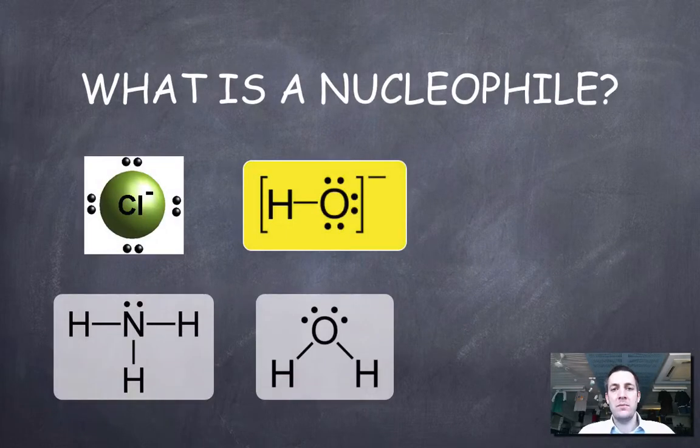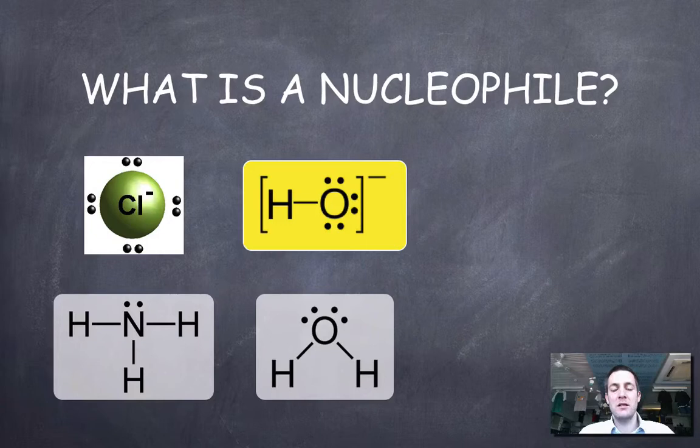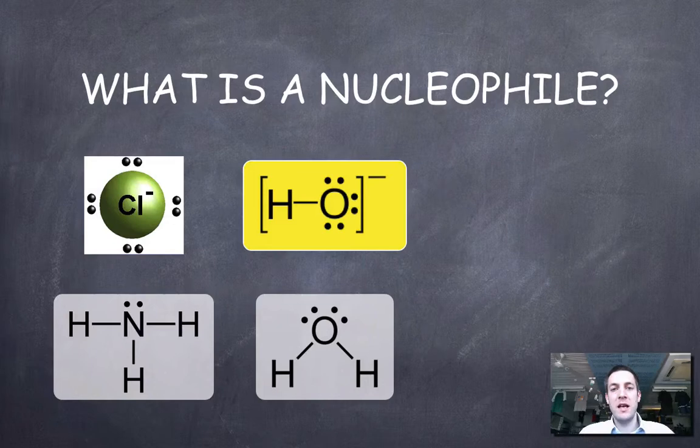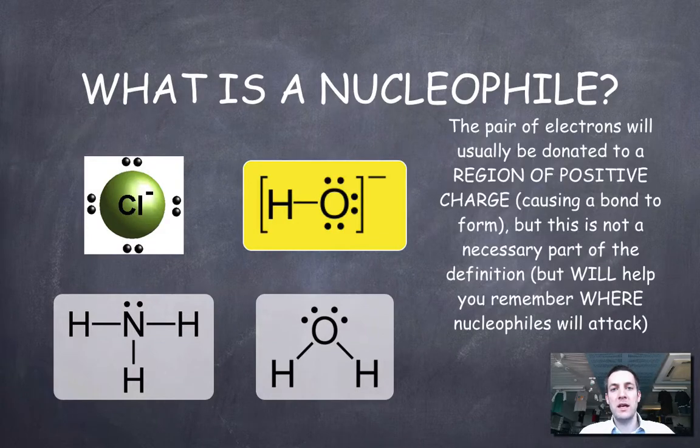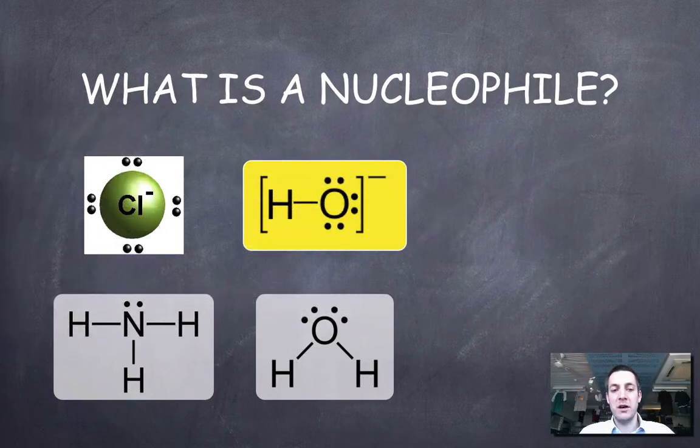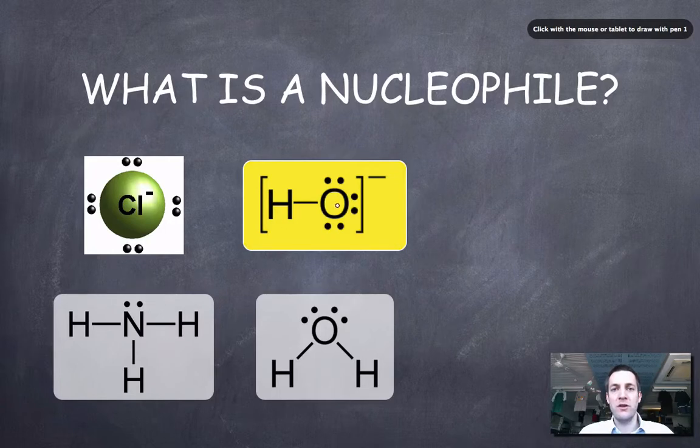Before we start looking at how mechanisms might work let's define the term nucleophile. This is an important thing to be able to define. A nucleophile is any species with a lone pair of electrons which it can use to make a bond. Nucleophiles can be negative ions and you can see that this one in yellow I've made it yellow because it's the most important nucleophile by far in the standard level topic.